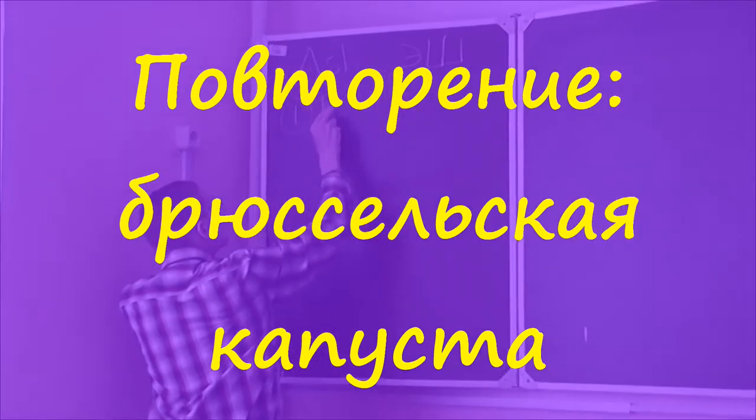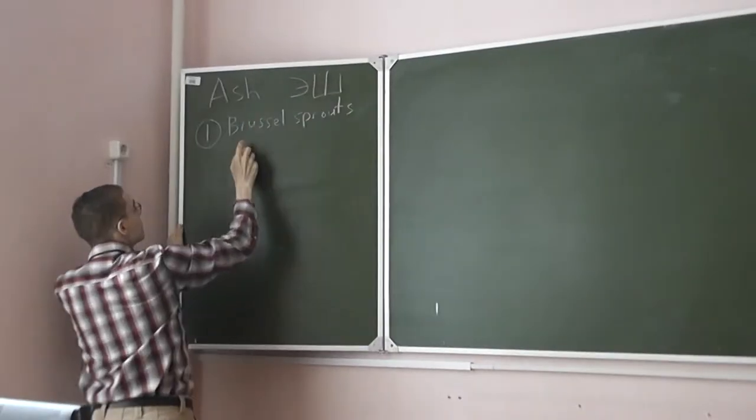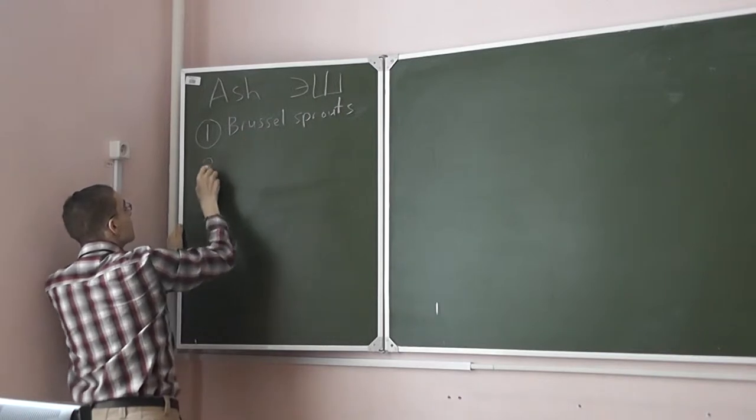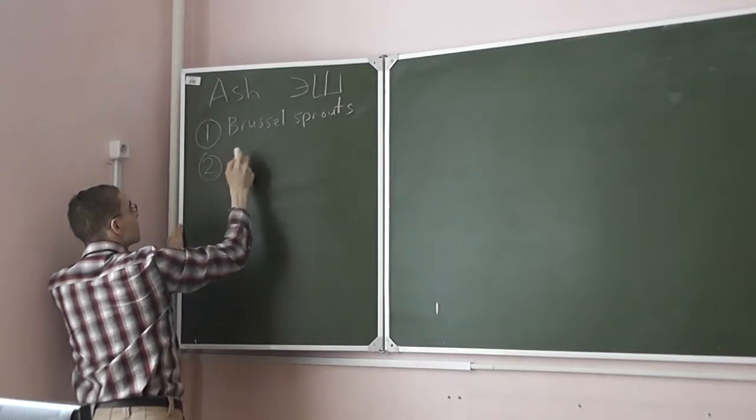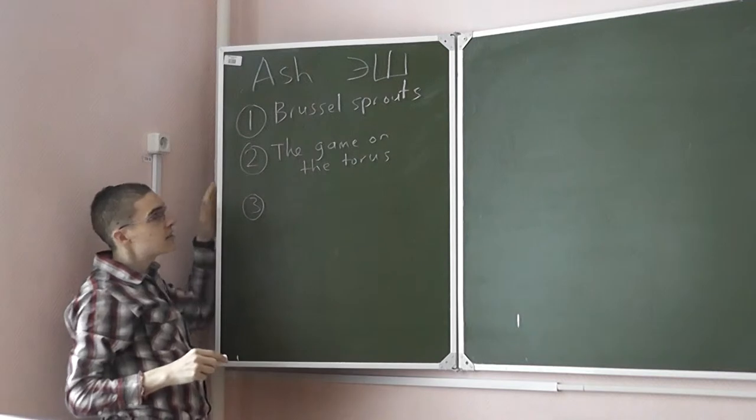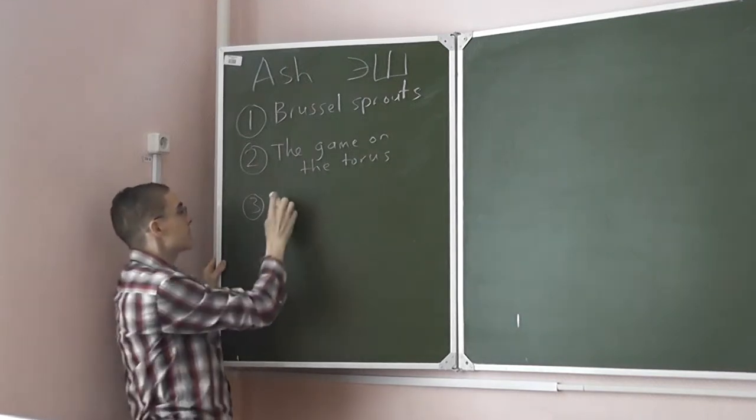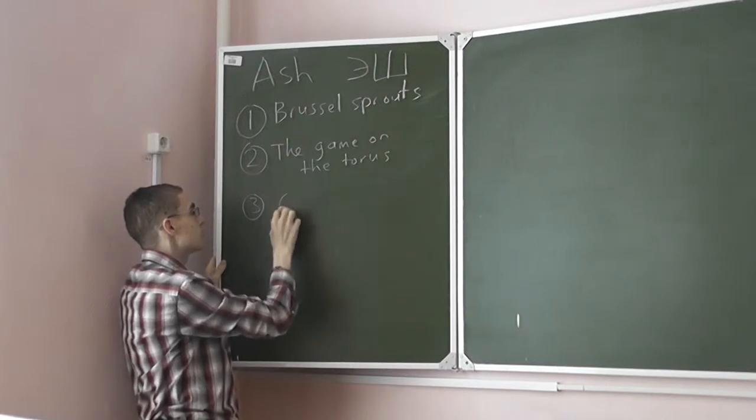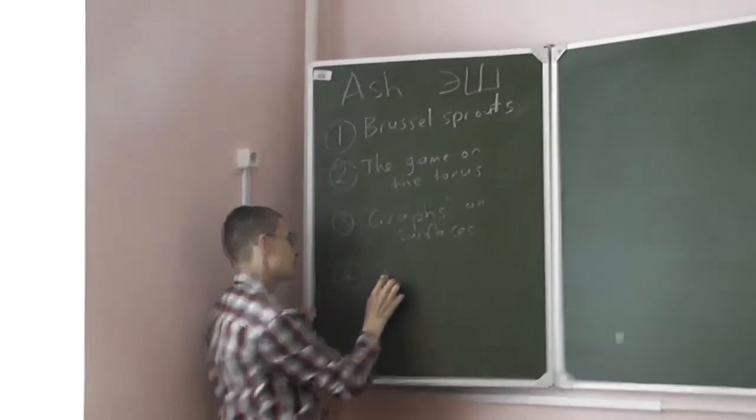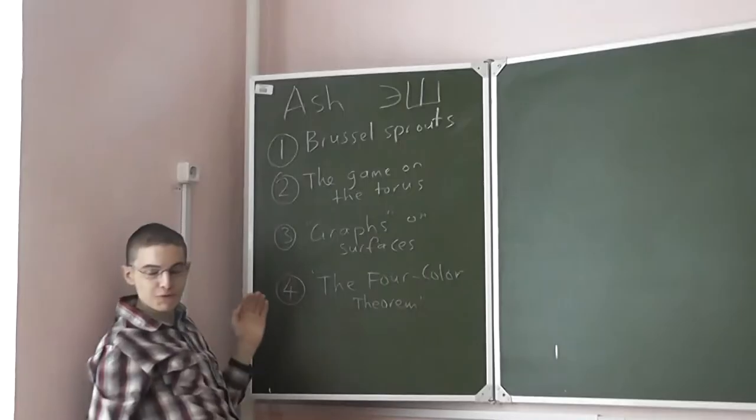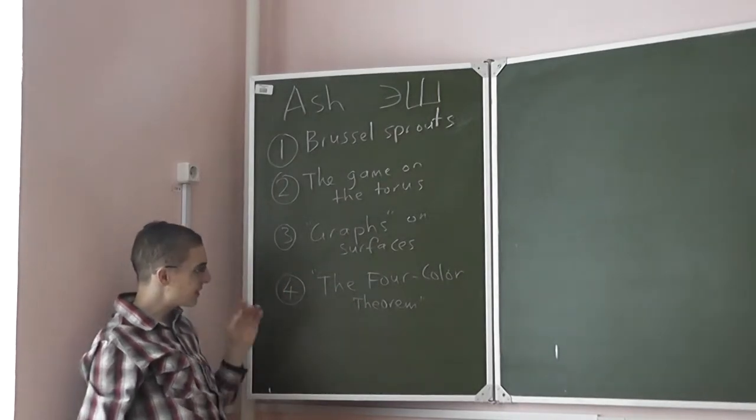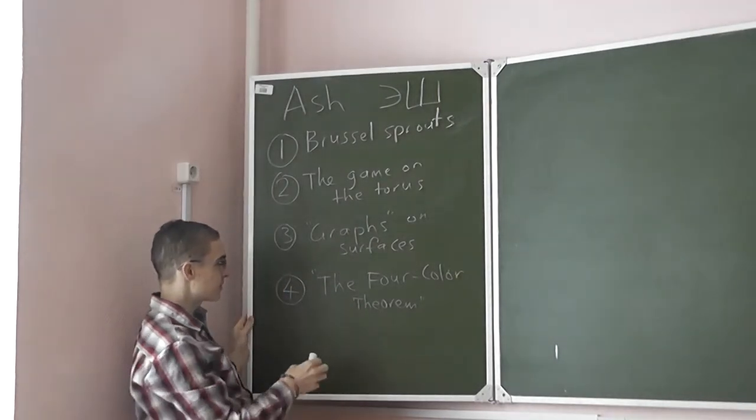So let's just talk about what we talked about today. So today, let's return to the Brussels sprouts. And then let's look at this game on the torus and continue this look at what I call graphs, embed graphs on surfaces. These are all the famous four-color theorem, but we'll look at simpler versions of it.